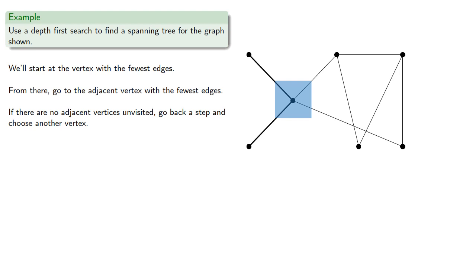So we'll go back one step, and now, again, go to the vertex with the lowest degree. From here we don't really have any choice, we have to go to this vertex. And from here, again, we have a choice of two vertices, so we'll go to one of them.